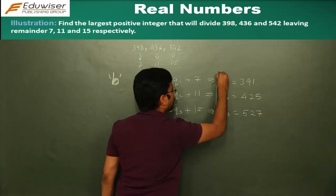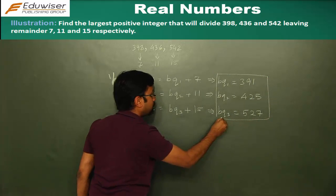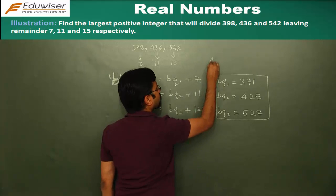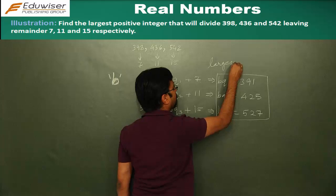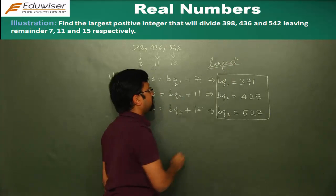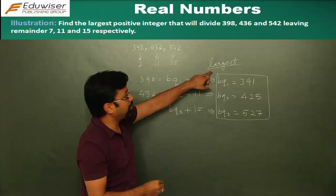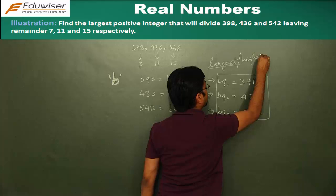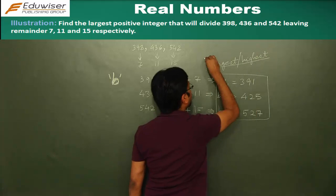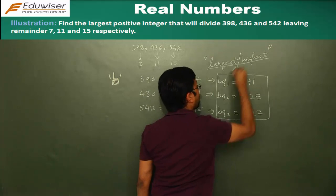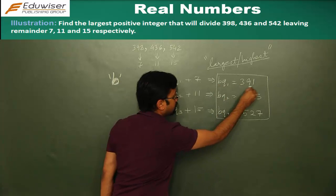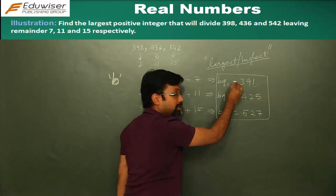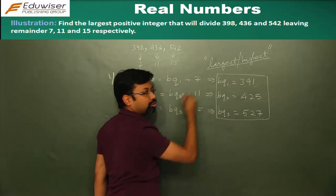From this given Euclid division lemma, we form these three equations. Now what do we have to find? We have to find the largest number, the largest value of the number B. So B has to be largest or highest. What is the other property of B? Is B, for these three numbers, is B a factor of 391? Yes it is, because B into some integer is equal to 391.